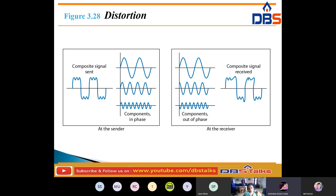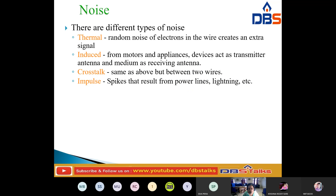Next, coming to noise. What is meant by noise? Noise is another cause of impairment. In impairment, noise is another part. We have several types of noise: thermal noise, induced noise, crosstalk noise, and impulse noise. These are the four types of noise we have.